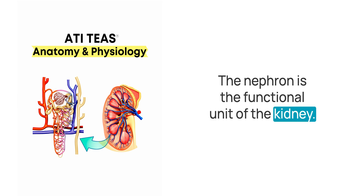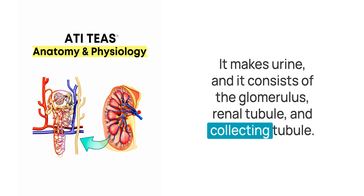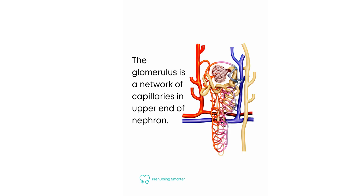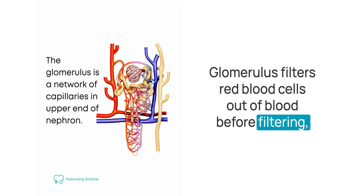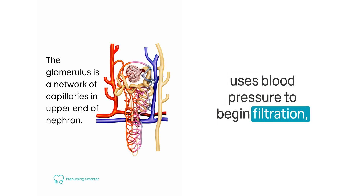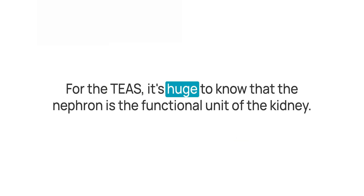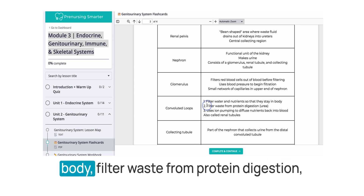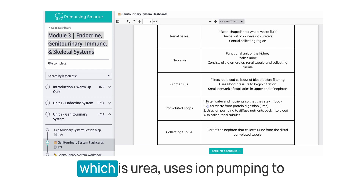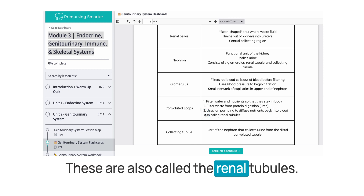The nephron is the functional unit of the kidney. It makes urine and consists of the glomerulus, renal tubule, and collecting tubule. The glomerulus filters red blood cells out of blood before filtering, uses blood pressure to begin filtration, and is a small network of capillaries in the upper end of the nephron. Convoluted loops filter water and nutrients so they can stay in the body, filter waste from protein digestion — which is urea — and use ion pumping to diffuse nutrients back into the blood. These are also called the renal tubules.